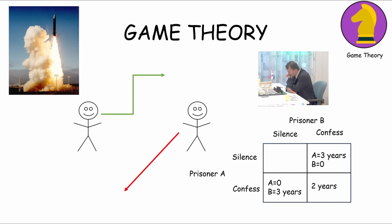If both stay silent, they both get lighter sentences. The dilemma arises because each prisoner must decide whether to trust the other or betray them for personal gain. Game theory analyzes the situation, showing that the rational choice for each prisoner is to confess, even though cooperation — both staying silent — would lead to the better overall outcome.